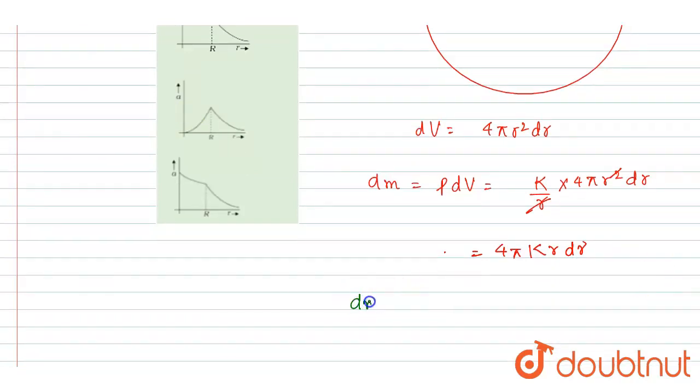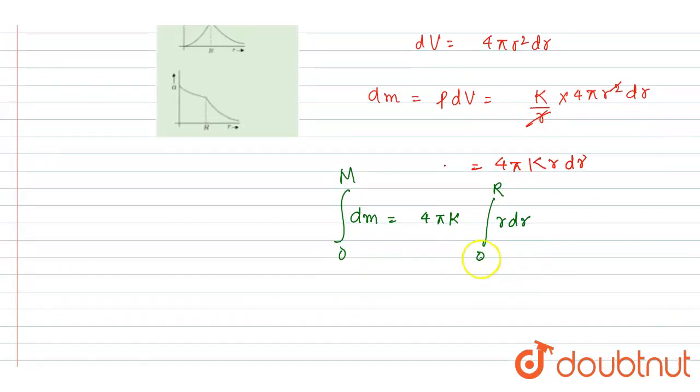I will take 4πk outside. Integrating from 0 to capital R, it will be r squared by 2. So it will be 4πk times R squared by 2. This will be the mass.